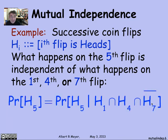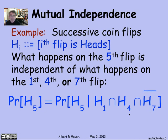For example, the probability of a head on the fifth toss equals the probability of a head on the fifth toss given that the first toss was a head, the fourth toss was a head, and the seventh toss was not a head — the complement of H7. That's just one of the many conditional equations that hold under mutual independence.